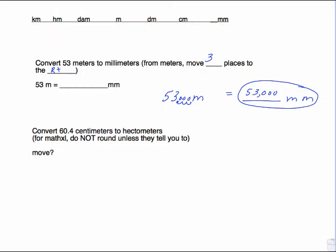Let's convert 60.4 centimeters to hectometers. Hectometers is right here, HM. To go from centimeters, which is right here, back to hectometers, it's one, two, three, four places. We're going to go four places to the left. So grab hold of here. One, two, three, four.